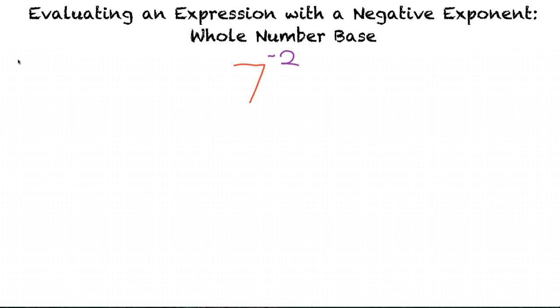How is evaluating an expression with a negative exponent any different than evaluating with a positive exponent? That's a great question. The main difference between a negative and a positive exponent is that we need to make the negative exponent a positive before we evaluate the expression. How would we do that?